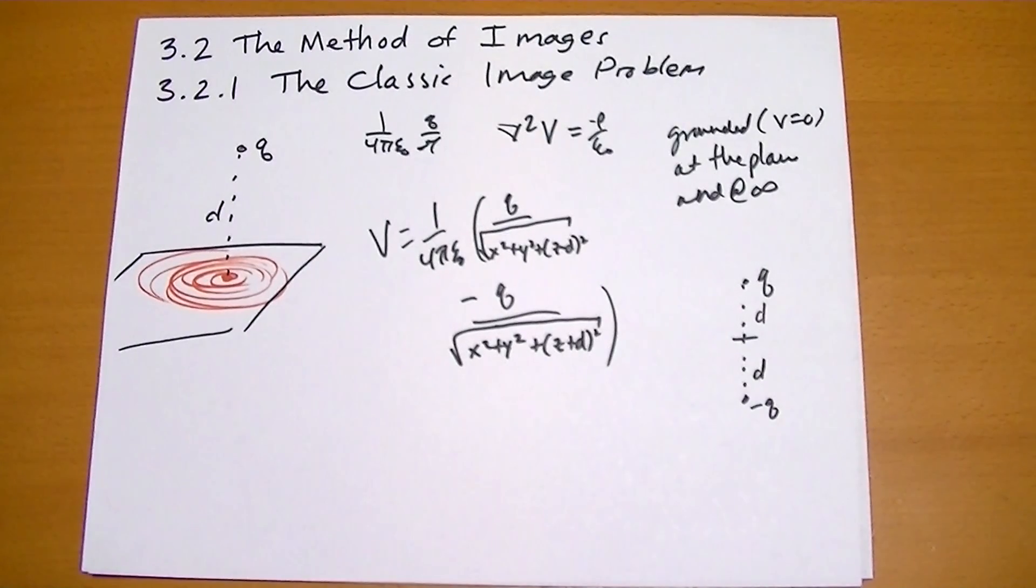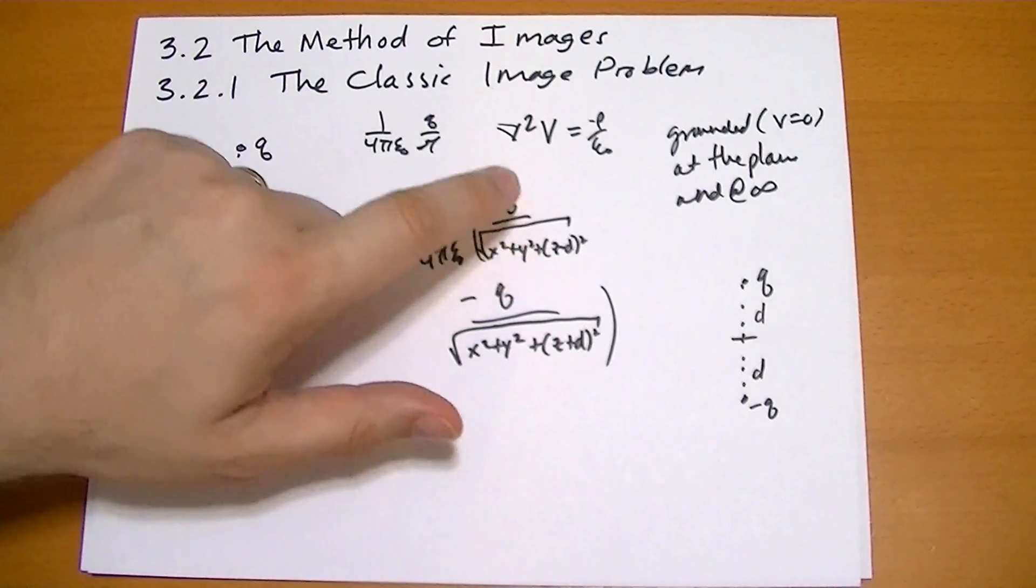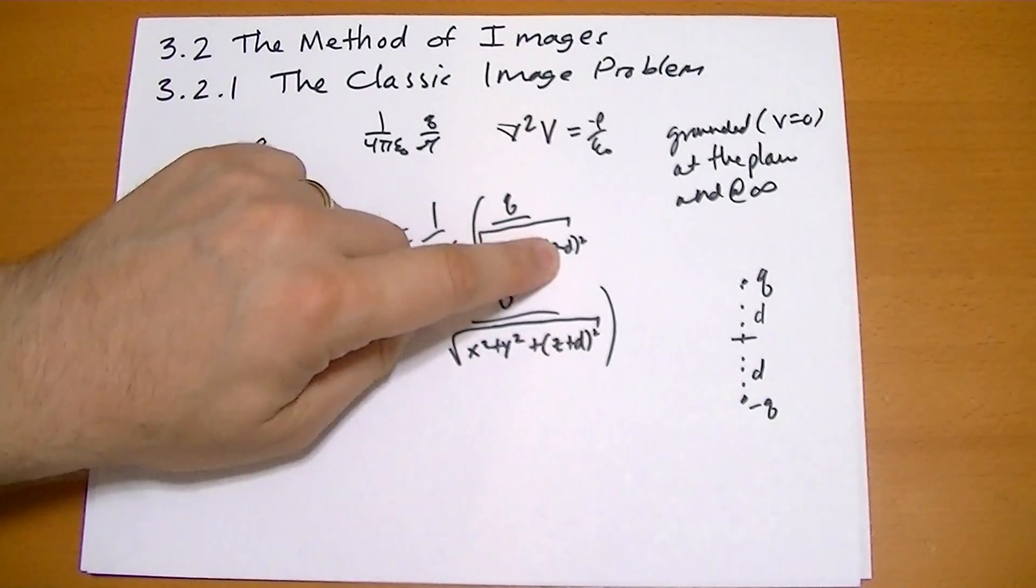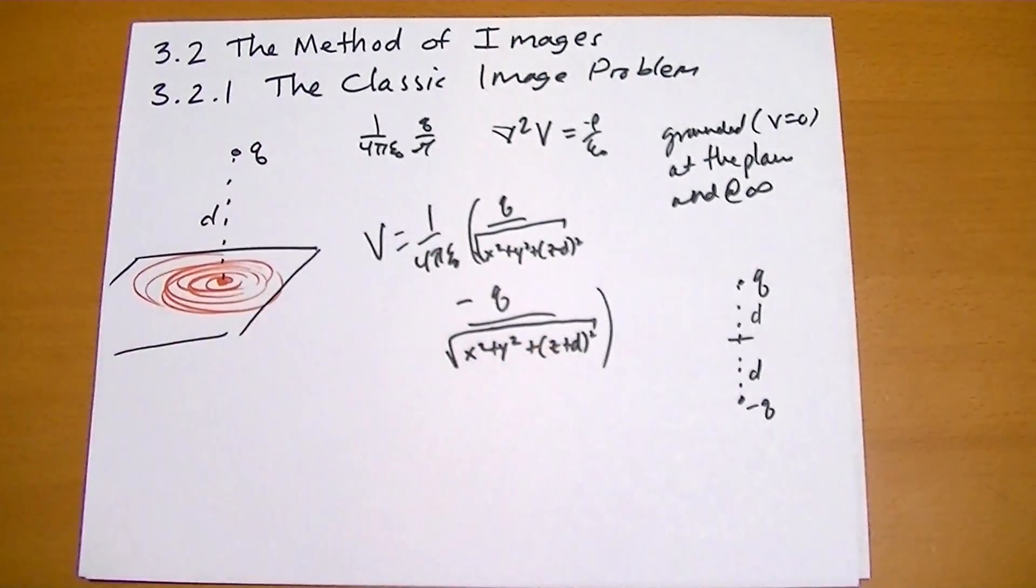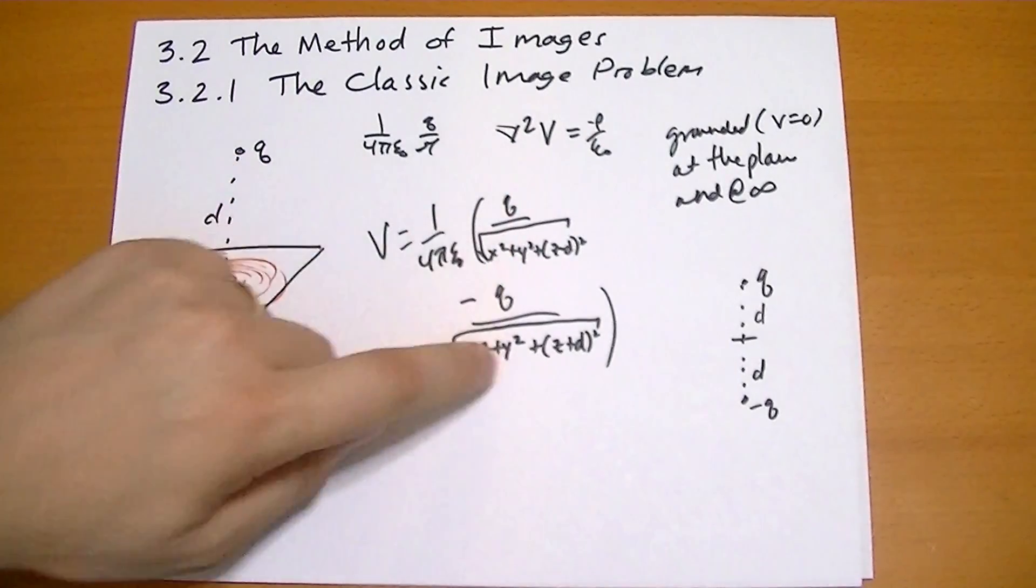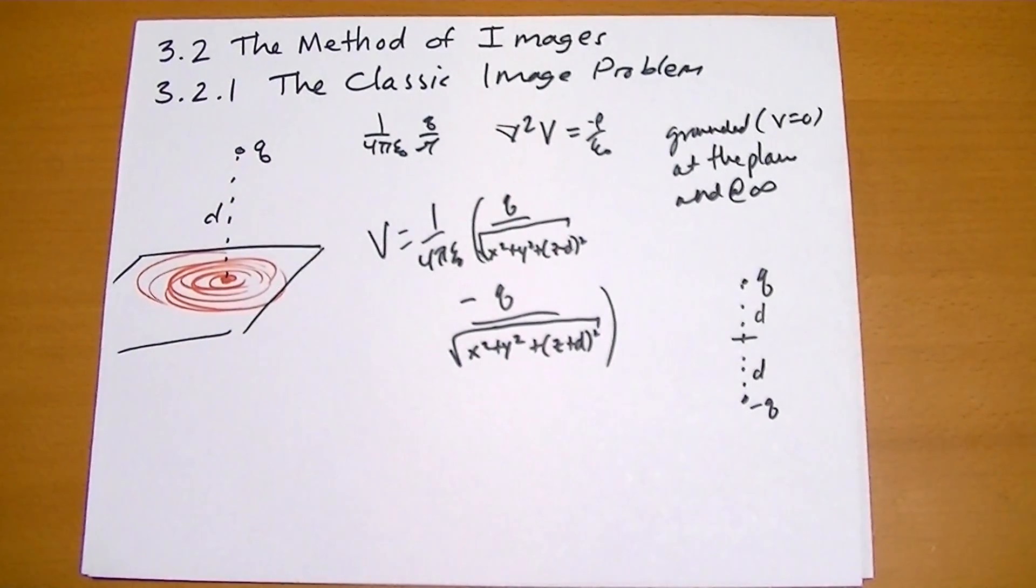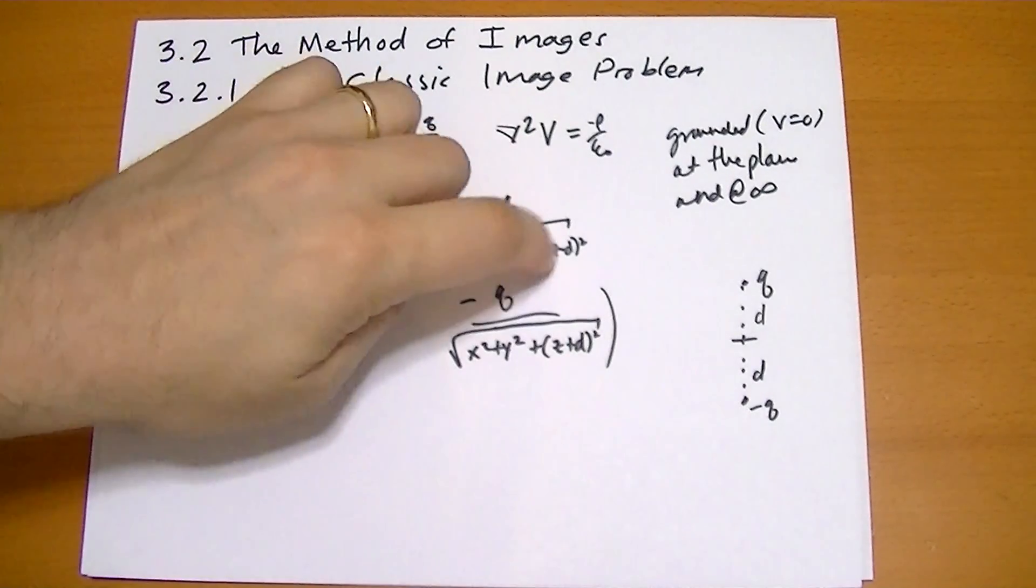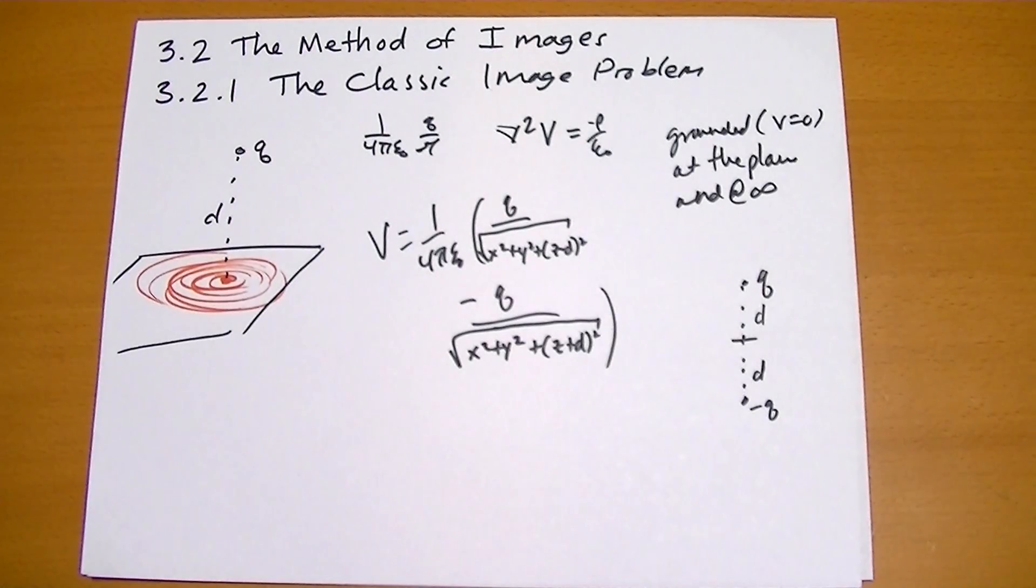When you set z equal to zero, guess what you get? Well, that becomes zero, that becomes zero. This becomes plus d squared, this becomes plus d squared, and so you have q over this minus q over the same thing, you have zero. And so we've satisfied the boundary conditions, also at infinity, when you go off in any direction, the denominator grows and grows, it becomes zero. So we've satisfied the boundary conditions with this equation, even though we solved a completely different problem, which is the beauty of the uniqueness theorem.